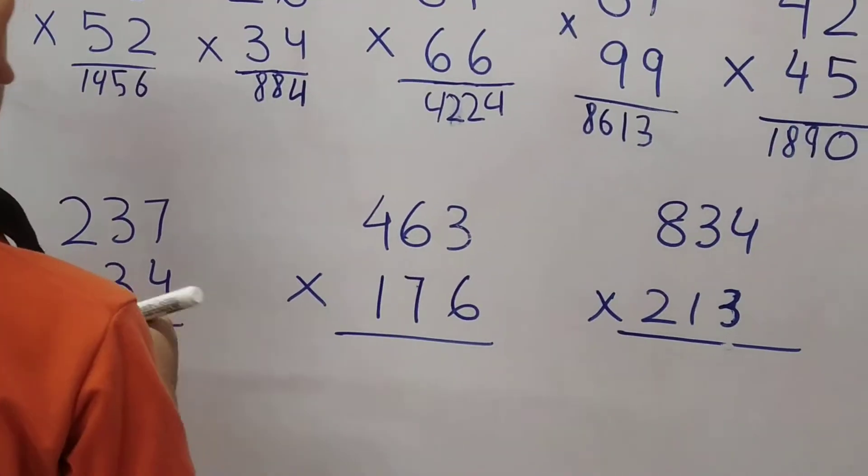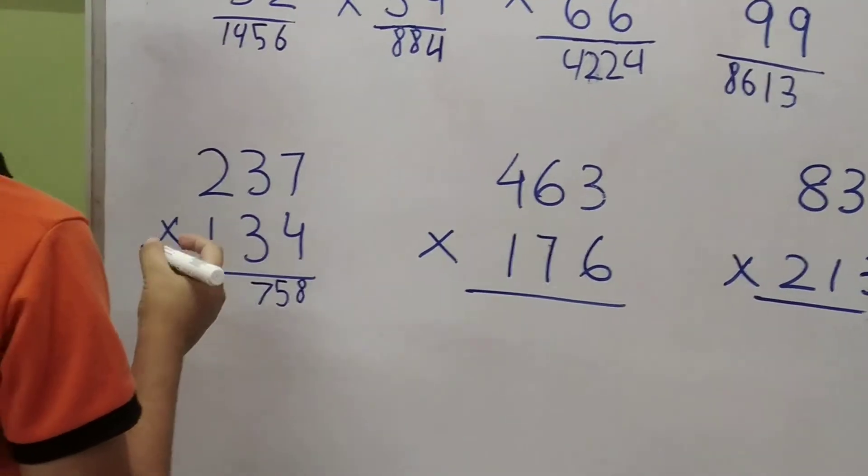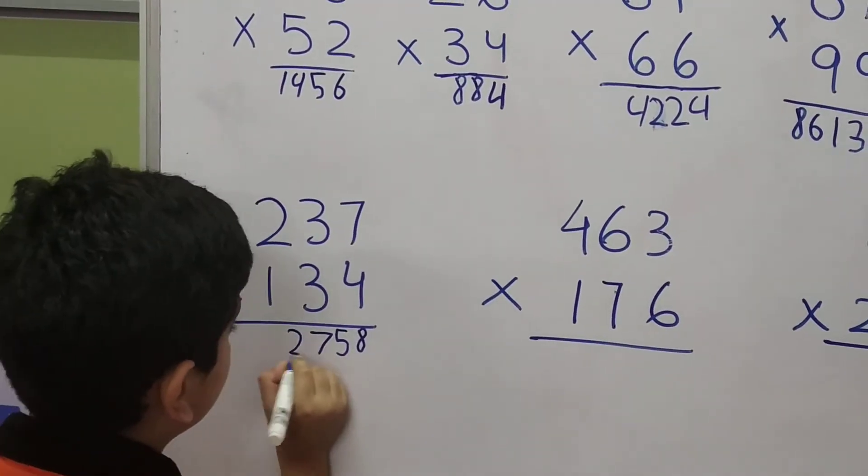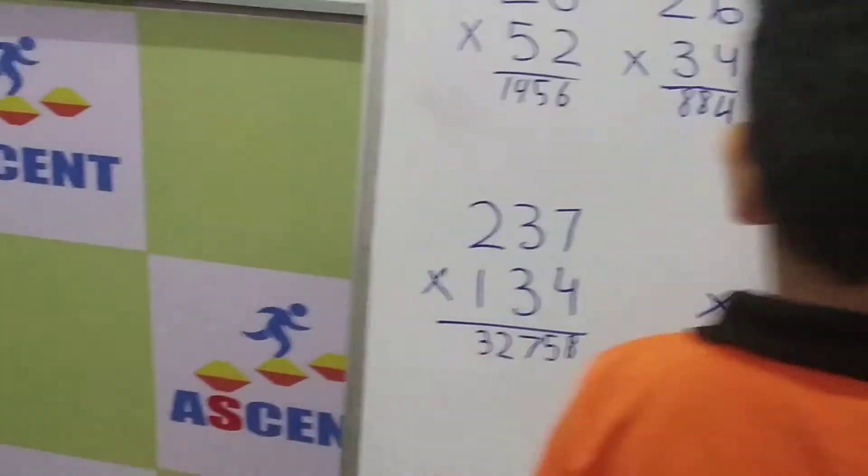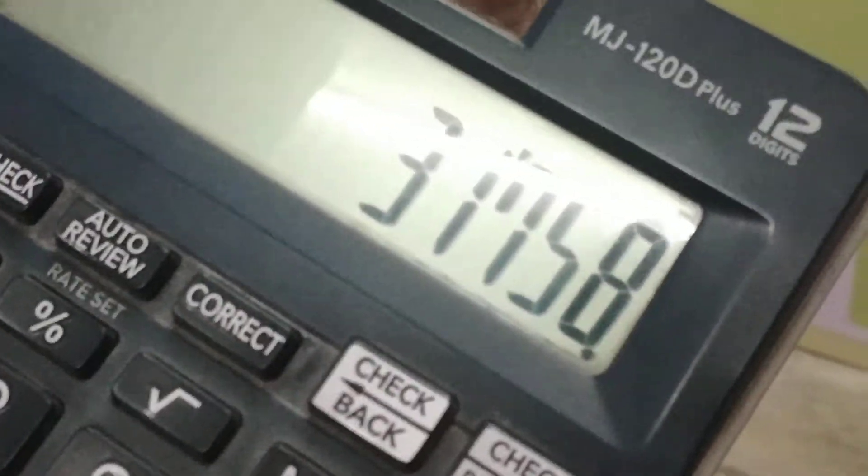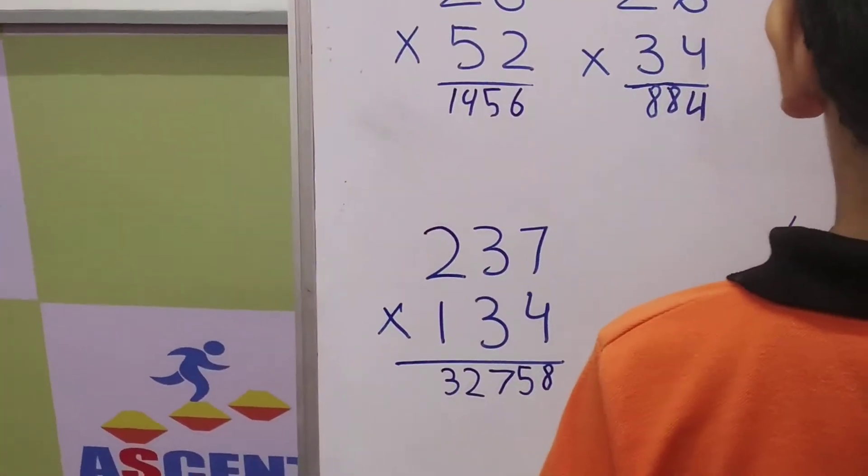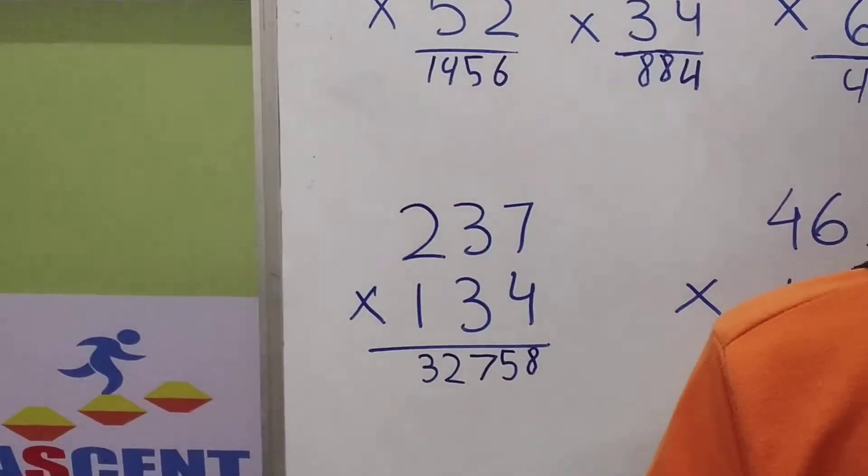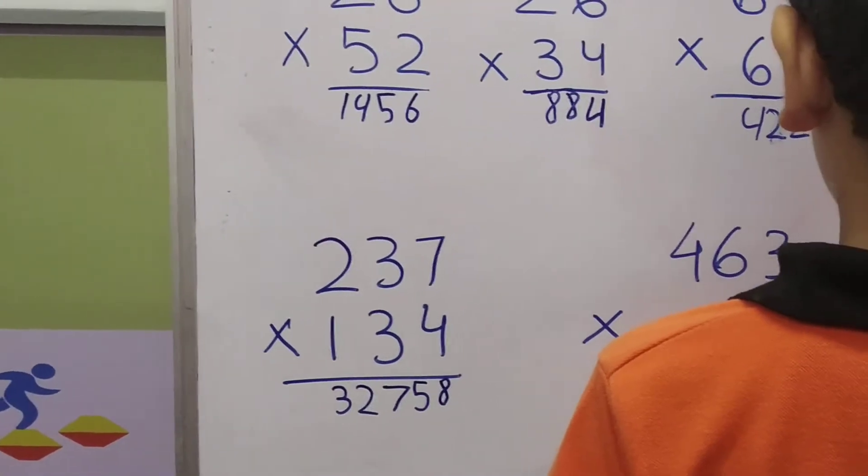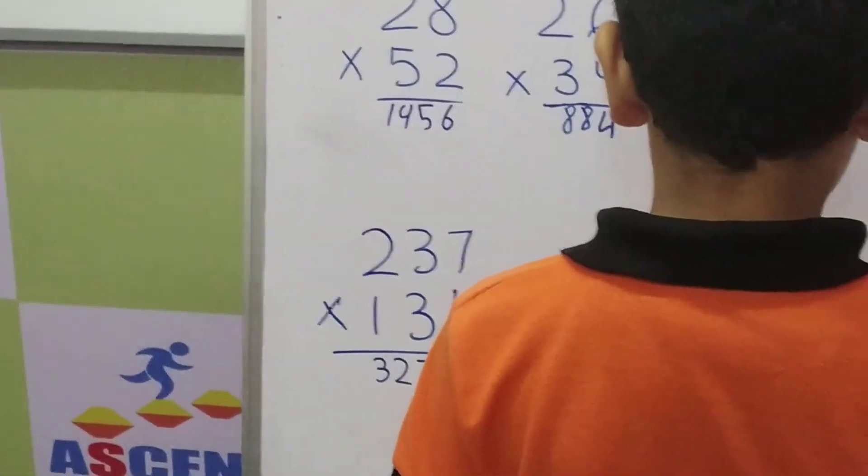The question right now in front of him is 237 into 134. 237 into 134, answer is 31758. So his answer is 31758. Now he is writing.